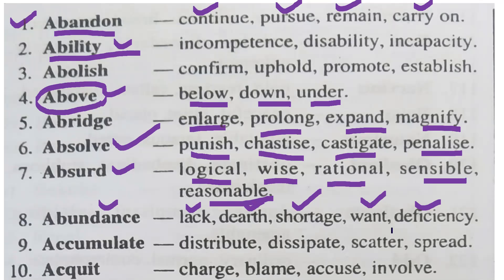Number nine — accumulate. Accumulate means jama karna in Hindi. What is the antonym of accumulate? The antonym of accumulate is: distribute, dissipate, scatter, spread. You have to understand it like that.